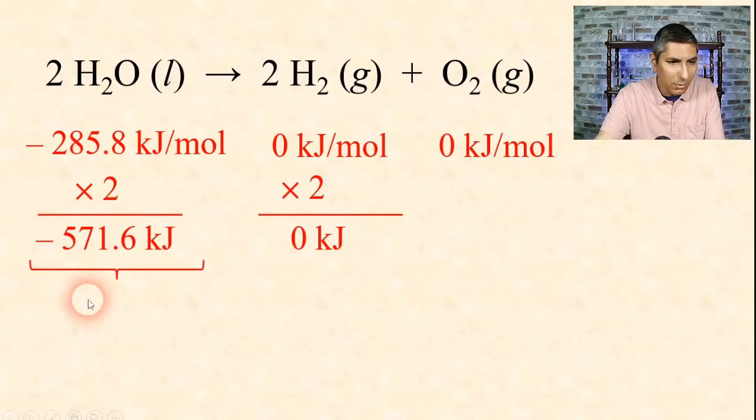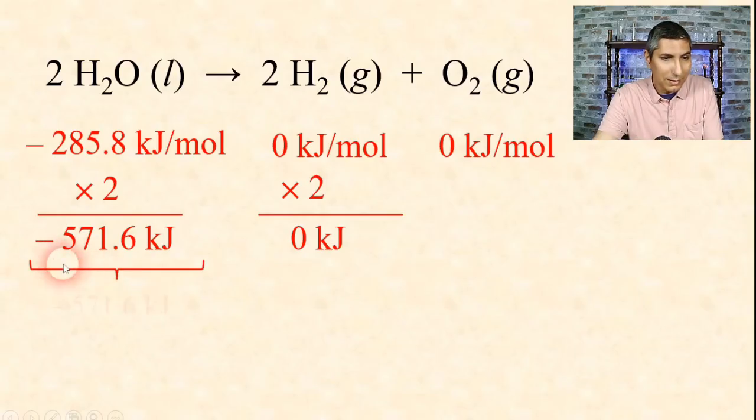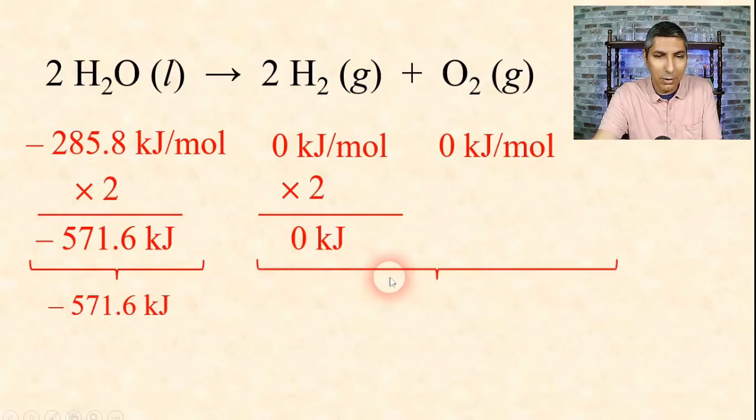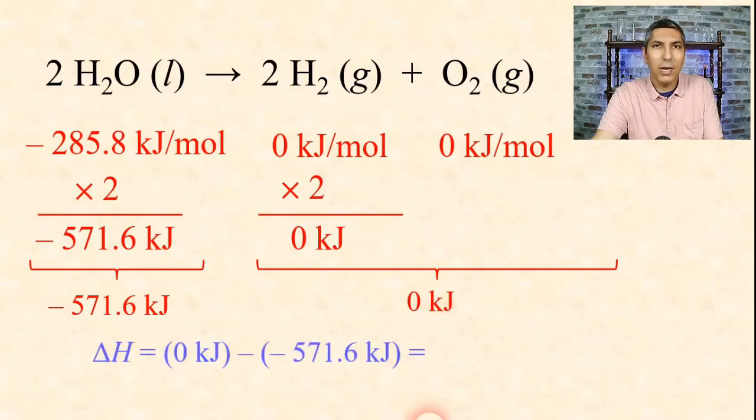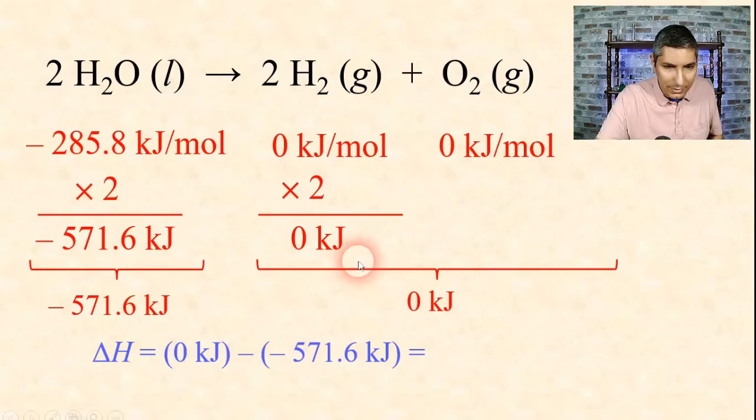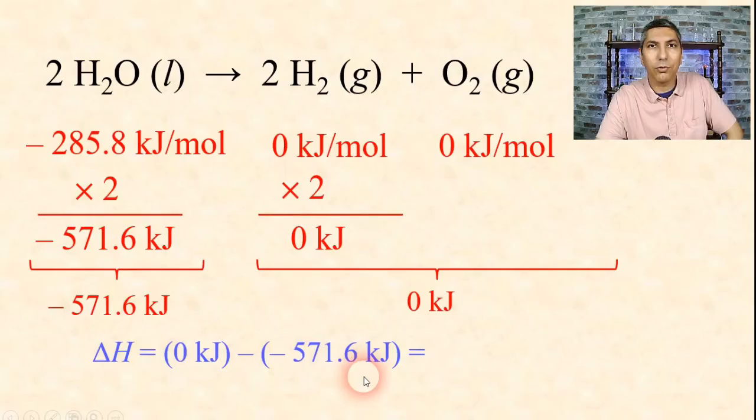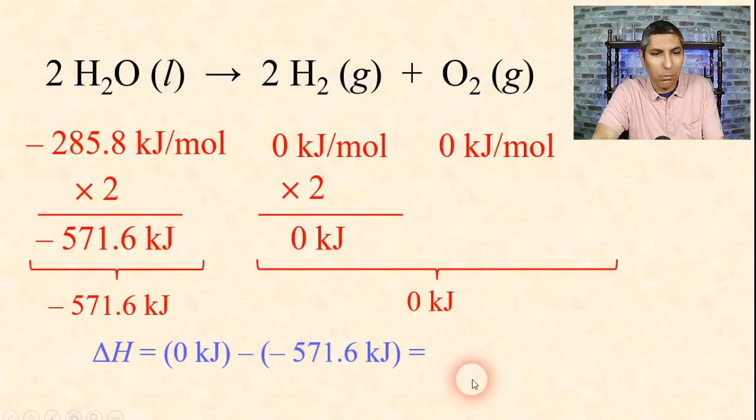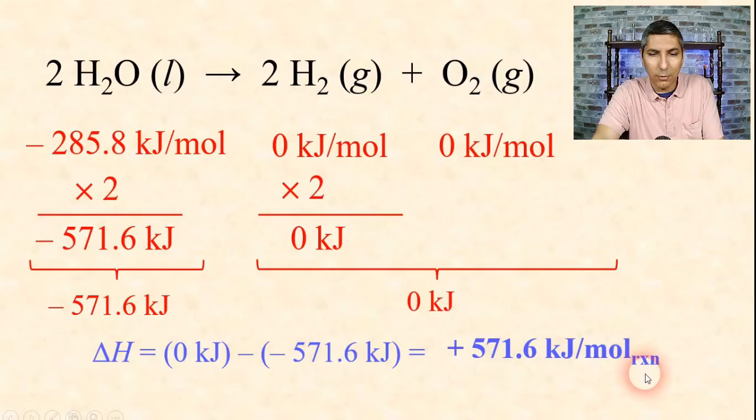Any element in its most natural state is going to have an enthalpy of formation of 0. That's why we see a couple zeros in here. We have to take the sum of all the products and subtract the sum of all the reactants to find the delta H. The sum of all the reactants is negative 571.6 kilojoules, and the products are 0 plus 0, which is just 0. Delta H is the sum of the products minus the sum of the reactants, or right side minus left side. So we take 0 minus negative 571.6 kilojoules.